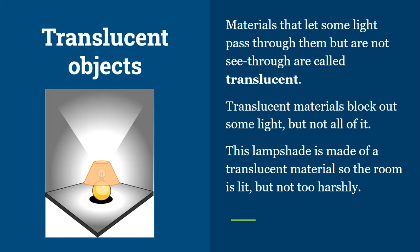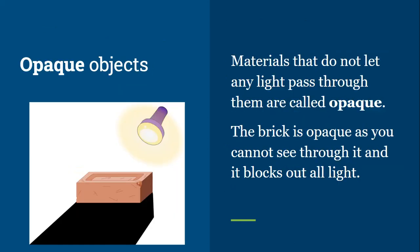The materials through which light can propagate partially are known as translucent materials. Translucent materials block out some light but not all of it. The materials through which light cannot propagate at all are known as opaque materials. For example, brick is opaque as you cannot see through it and it blocks out all light.